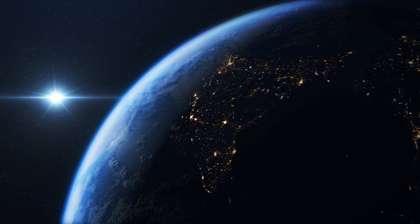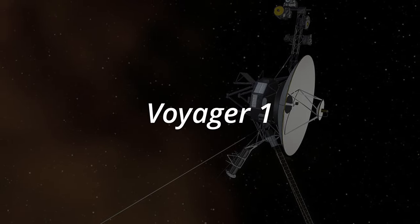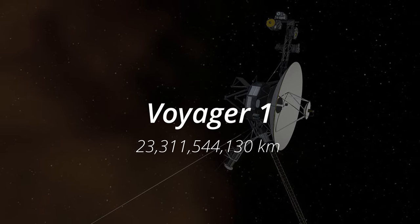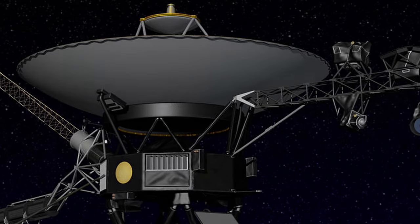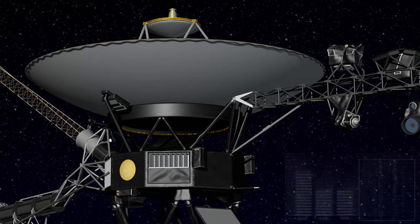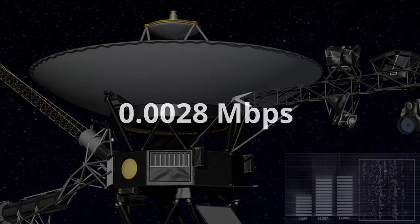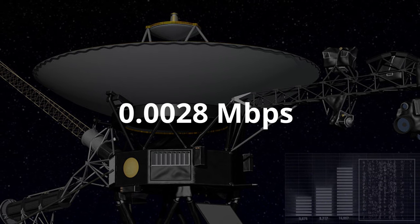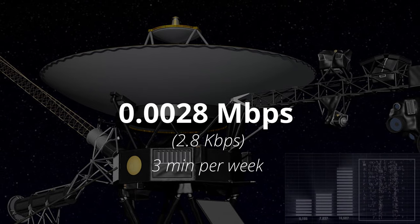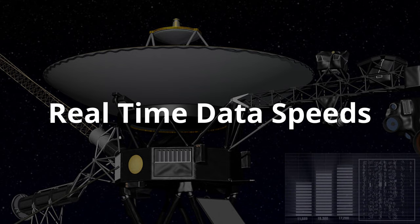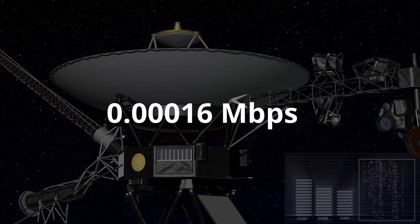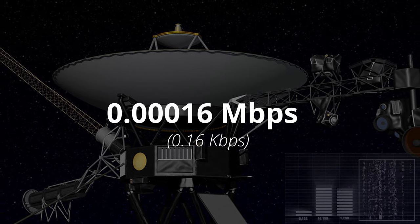And let's never forget about the space probe Voyager 1, which is currently — at the time of this video — 23.3 billion kilometers from Earth. Voyager 1, the farthest traveled man-made object, can still send data back to us at a max downlink speed of 0.0028 megabits per second, or 2.8 kilobits per second, but only for 3 minutes every week. Real-time data is sent at a much slower 0.00016 megabits per second, or 0.16 kilobits per second.